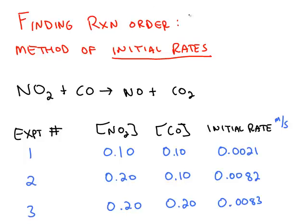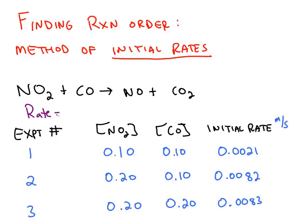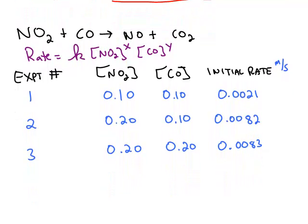We've been talking about the reaction order. Here is the method we're going to use to find the reaction order when we have more than one reactant. In the initial rate method, what you do is you change the concentration of one chemical, leave the concentration of all the other chemicals the same, and measure the starting or initial rate of the reaction.